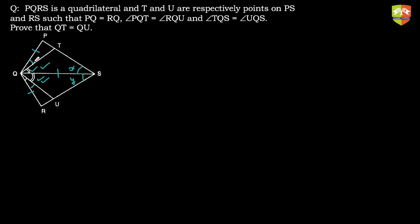Let's check if triangles PQS and RQS can be proved congruent. Clearly, PQ equals QR — one side is given equal. The two individual angles PQT and RQU are given equal, so adding the equal given angles: angle PQT plus angle TQS equals angle RQU plus angle UQS, giving angle PQS equals angle RQS. And there is a common side QS.